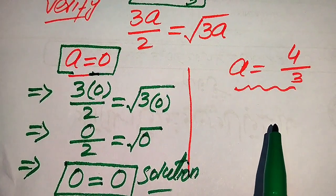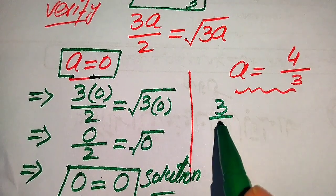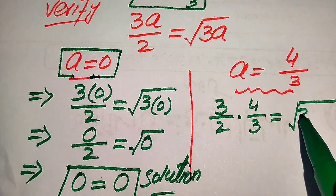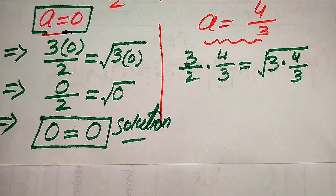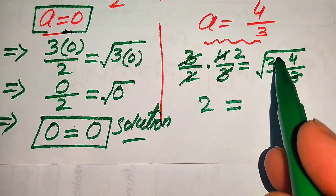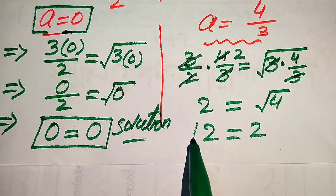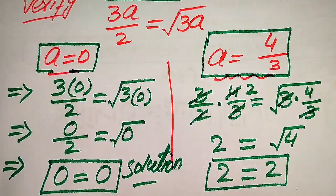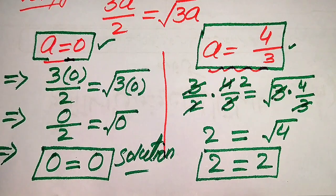Now we verify the second root a equals 4 over 3. Substituting into the left side: 3 over 2 times 4 over 3 — the 3s cancel — gives 2. On the right side: the square root of 3 times 4 over 3 — the 3s cancel — gives the square root of 4, which equals 2. Both sides equal 2, so a equals 4 over 3 is also a valid solution. These are the two final answers.